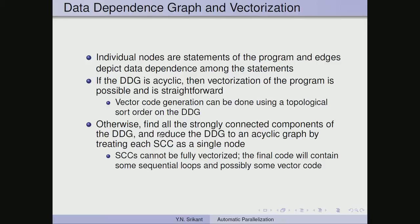If the graph is cyclic, we find all strongly connected components of the DDG and reduce it to an acyclic graph by treating each SCC as a single node. Once acyclic, vector code can be generated, but SCCs themselves cannot be fully vectorized — the final code will contain some sequential loops and possibly some vector code.